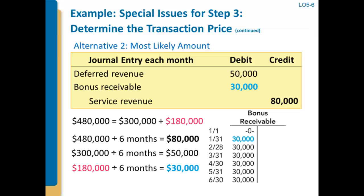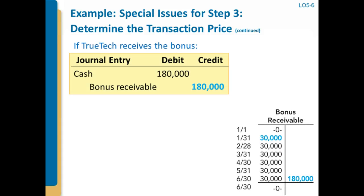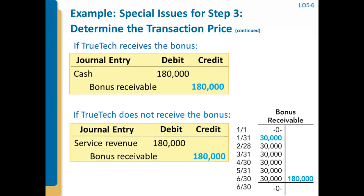That's pretty different from what we're used to seeing under current GAAP. There are a couple of different outcomes. One possibility is they get the bonus — they accumulate up to $180,000, take down the receivable, and get cash of $180,000. That's a world where the estimate was correct. The downside is where the estimate was incorrect: we built the bonus receivable up to $180,000, but now we're going to reduce service revenue — debiting down revenue rather than debiting up a cash asset — because at the end we realize we're not going to get the bonus.